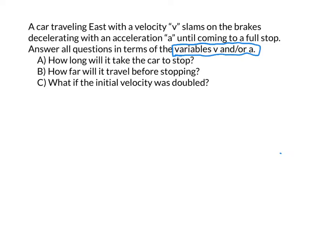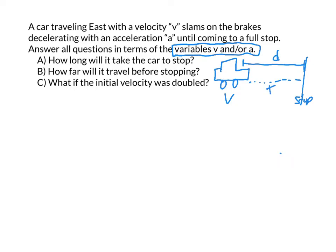We're going to set these up the same way — we're going to sketch a picture first. We have a car moving with a velocity v, and it's going to slam on the brakes and stop. It's going to cover some distance, take some period of time, and decelerate. If we're going to the right with eastward velocity and we want to slow down and stop, we must have a leftward westward acceleration.